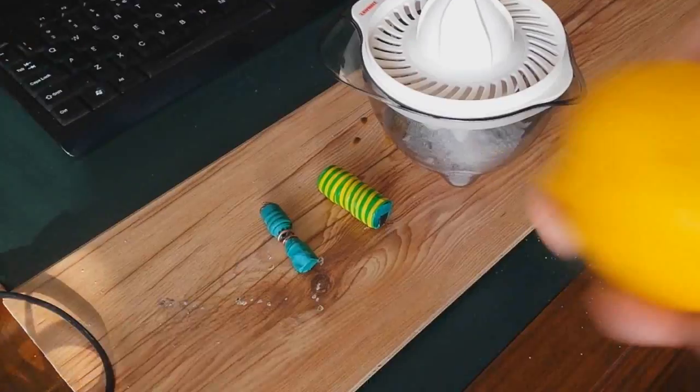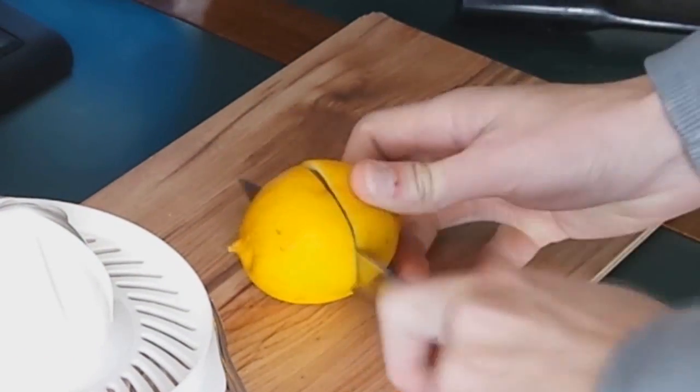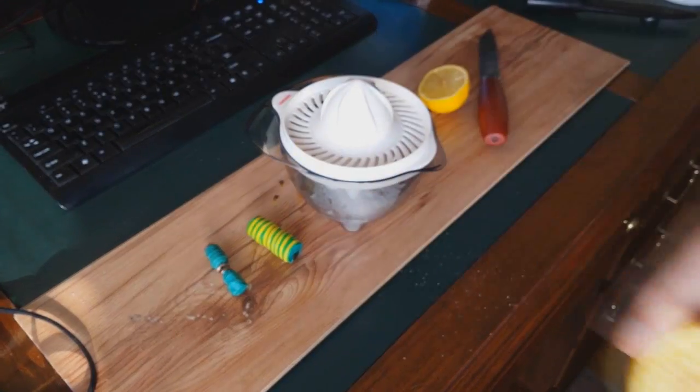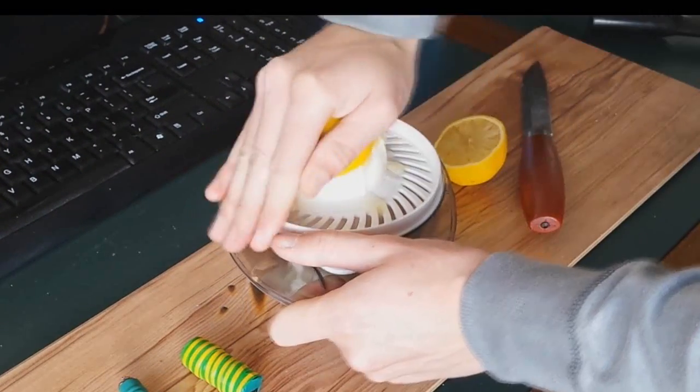Then you take a lemon like this one and slice it open. Start squeezing the moisture of the lemon onto the soda, just like that.